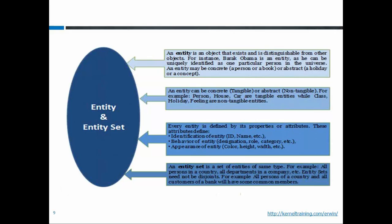Every entity must have at least one attribute, though generally there will be multiple attributes. Some attributes define the identification of the entity, some define its behavior, and some define its appearance — like color, height, and weight, which describe appearance. Designation and role describe behavior. If an entity has no appearance-related attributes, it is non-tangible. If it has appearance attributes like color, it is tangible. When we identify the set of attributes for an entity, we check which group they fall into: identification, behavioral, or appearance attributes.